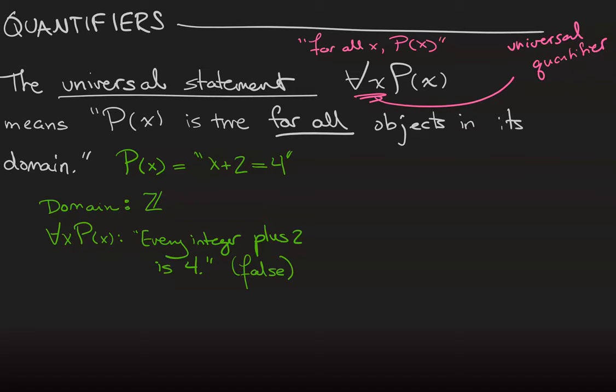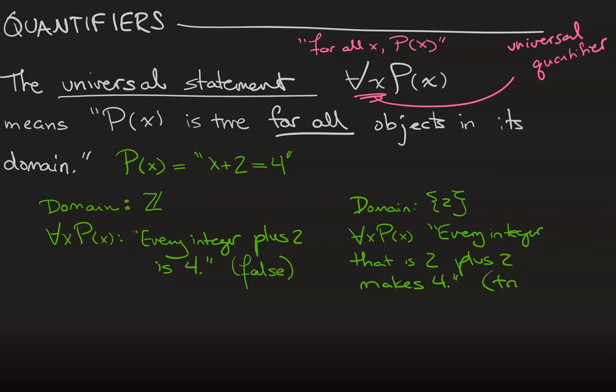However, what if our domain was just the integer 2? All right, and then our universal statement says every integer that is 2 plus 2 makes 4. That statement would actually be true. So now this example is kind of silly because we usually wouldn't take our domain to just be the integer 2, but it goes to show you that the truth value of a quantified statement can change depending on the domain.